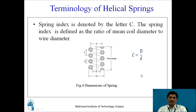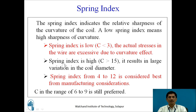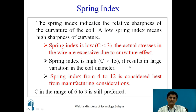Another important term is the spring index, denoted as C. The spring index is defined as capital D divided by small d, where capital D is the mean coil diameter and small d is the wire diameter. If C is below 3, actual stresses in the wire are excessive due to the curvature effect. If C is above 15, it results in large variation in coil diameter. A spring index from 4 to 12 is best from manufacturing considerations; C in the range of 6 to 9 is still preferred.